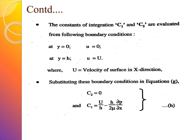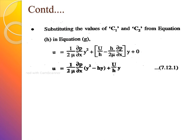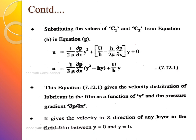Applying boundary conditions: at y = 0, velocity u = 0; at y = h (maximum film thickness), velocity u = U (surface velocity). Substituting these conditions gives the values of C₁ and C₂. The final velocity distribution equation is: u = (1/2μ)·∂p/∂x·(y² − hy) + (U/h)·y. This gives the velocity of any layer in the fluid film between y = 0 and y = h.